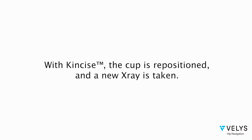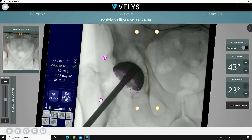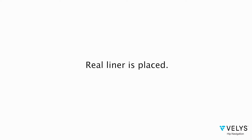With Concise the cup is easily repositioned and I then take an additional x-ray. Here the cup is in my preferred safe zone with the goal for this patient being near 43 degrees of inclination and 23 degrees of anteversion.